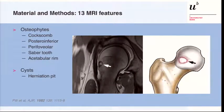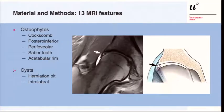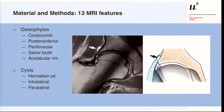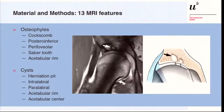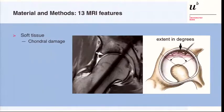For cysts, we analyzed the classic herniation pit — which even when visible on MRI is sometimes not clearly visible on conventional radiographs, particularly without a fluid-filled lesion inside — intralabral cysts, paralabral cysts, and acetabular rim cysts located at the rim of the acetabulum, in contrast to acetabular center cysts that occur more centrally on the lunate surface.